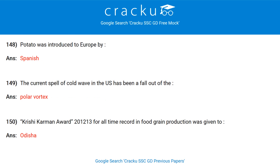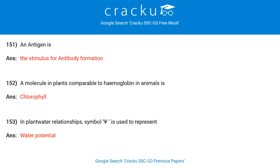The site of birth of Gautam Buddha is marked by a Rummindei pillar of Ashoka Maurya. Preparation of butter and ghee by a household for their own use is a part of consumption. Potato was introduced to Europe by the Spanish. The current spell of cold wave in the US has been a fallout of the polar vortex. Krishikarman Award 2012-13 for all-time award in food grain production was given to Odisha. An antigen is the stimulus for antibody formation. A molecule in plants comparable to haemoglobin in animals is chlorophyll. In plant-water relationships, the symbol psi (ψ) is used to represent water potential.